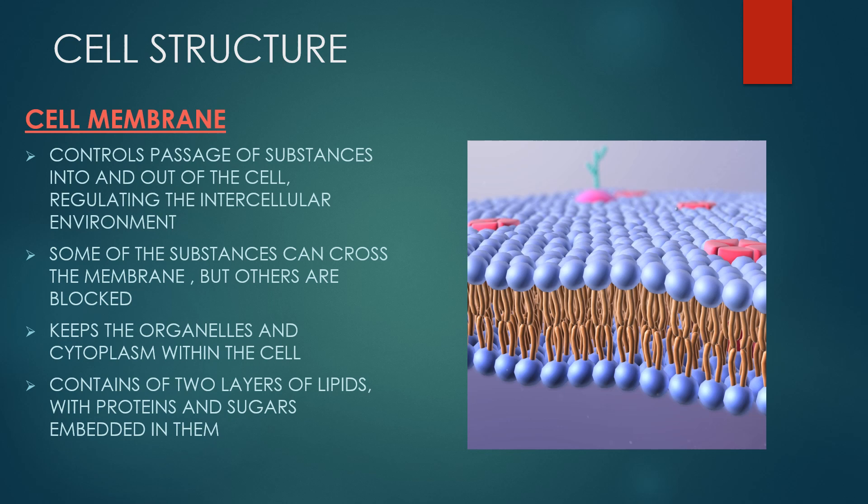The cell membrane, also called the plasma membrane, is found in all cells and separates the interior of the cell from the outside environment. The cell membrane consists of a lipid bilayer that is semi-permeable. The cell membrane regulates the transport of materials entering and exiting the cell.